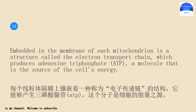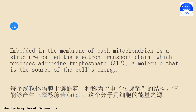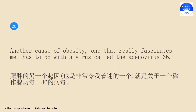Embedded in the membrane of each mitochondrion is a structure called the electron transport chain, which produces adenosine triphosphate, ATP, a molecule that is the source of the cell's energy.